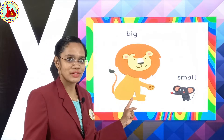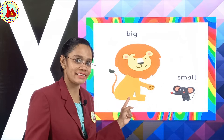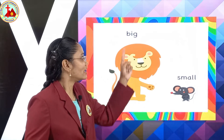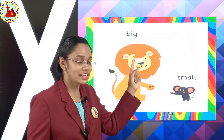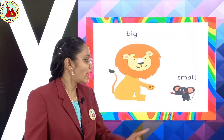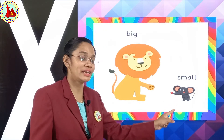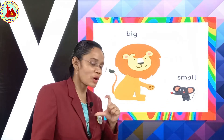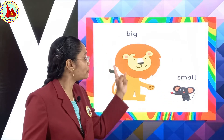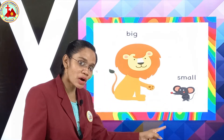Next one. What animal is this? He is a lion — the king of the jungle. Lion is big — B-I-G. And who is this animal? It is a mouse. Small mouse. You can say rat also. Rat is small — S-M-A-double-L. Opposite of big is small. Big, small.